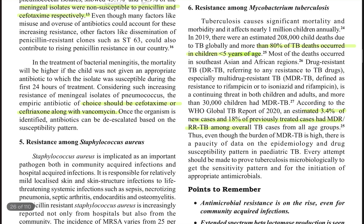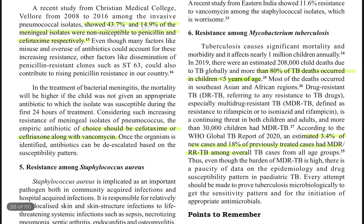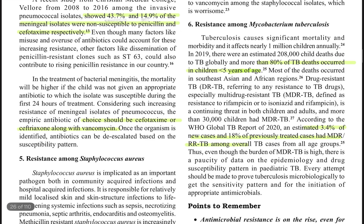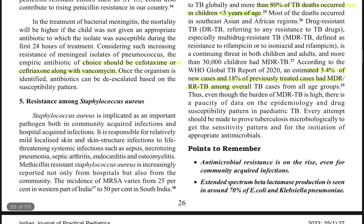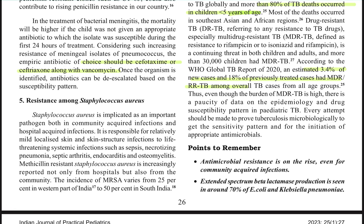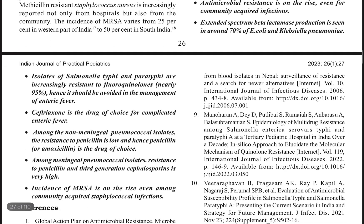To summarize, we have discussed Enterobacteriaceae, typhoid, pneumococcus in the brain and elsewhere, Staphylococcus, and Mycobacterium tuberculosis. Write two to three lines on each of these organisms and conclude by stating that antimicrobial resistance is on the rise, we need to be aware of antimicrobial susceptibility testing, and we should initiate appropriate antibiotics — starting with broad spectrum in a sick or ICU patient, then narrowing down as early as possible.